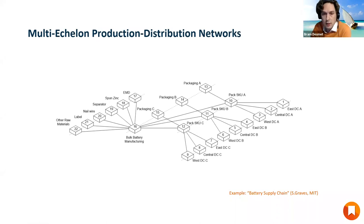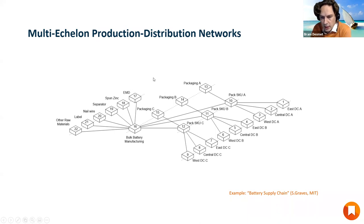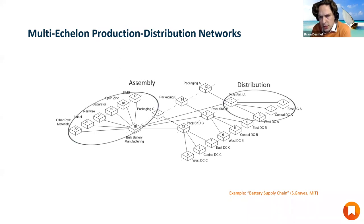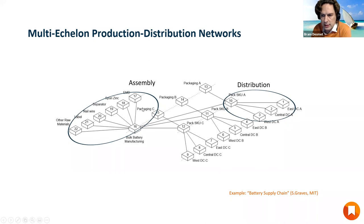Why do we call it multiple echelons? Because there are multiple steps. I have a step with the raw materials and the packaging, then the bulk battery step, the packaging step, and then the distribution step. So there are multiple steps or multiple echelons. There is an assembly part in it and a distribution part in it. When I did my research, I started by analyzing distribution systems. After that, I analyzed assembly systems. And if you can deal with both, then you can start coupling them in these more generic production distribution networks.